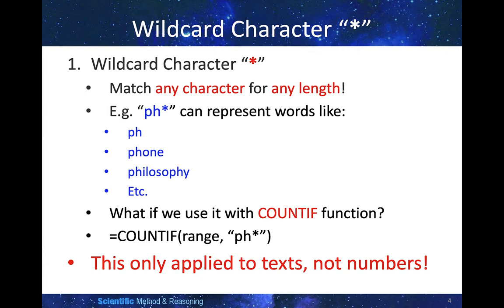There are three wildcard characters. The first one is the star (*). It matches any character for any length. For example, "ph*" can represent words like "ph", "phone", "philosophy", and any word starting with "ph". Using it with COUNTIF — say =COUNTIF with a range and "ph*" — will find the total number of cells within the range that start with "ph". Please be reminded that this only applies to text, not numbers.